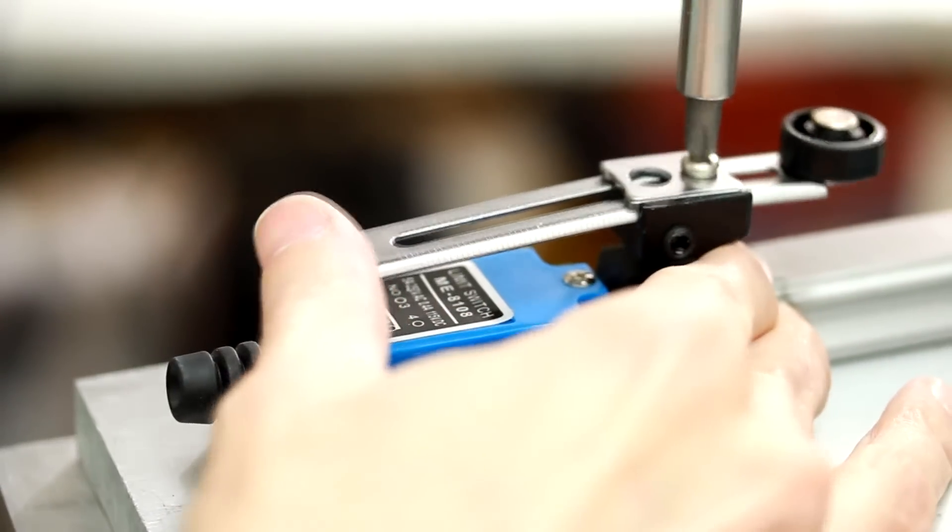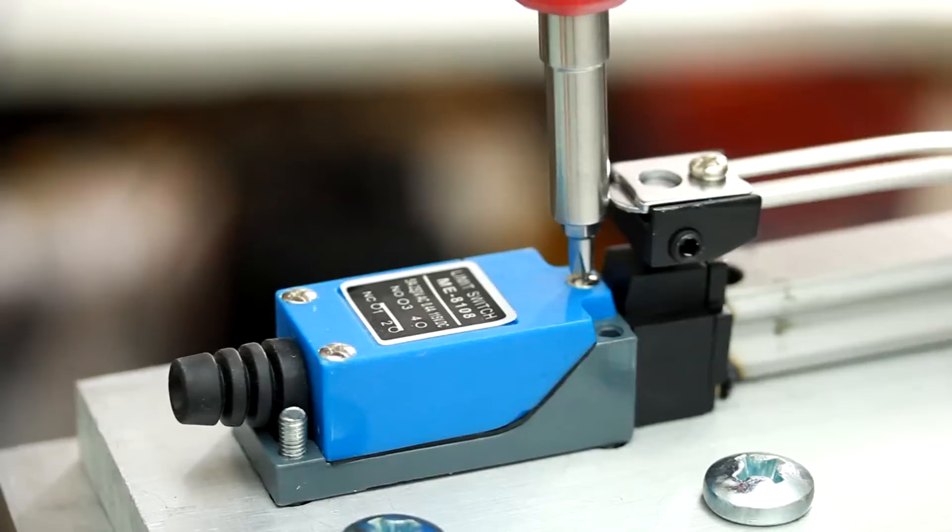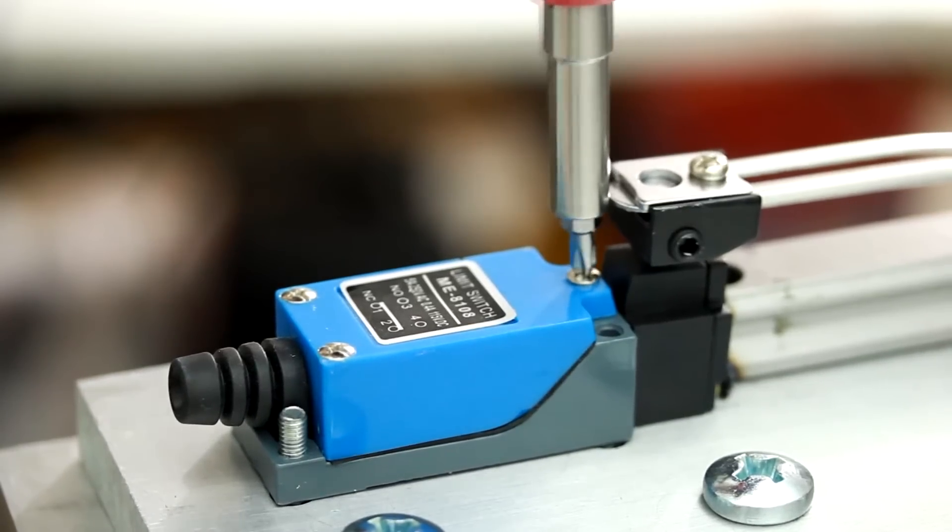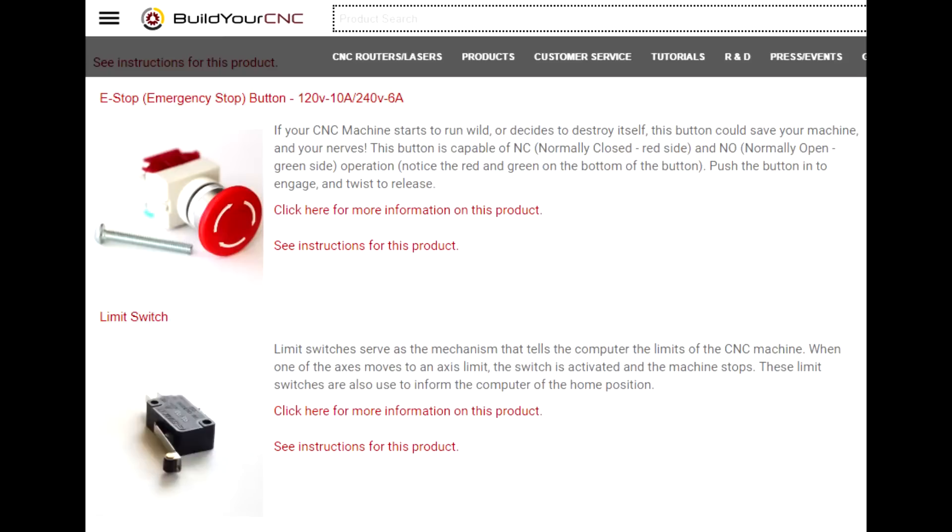In this video, I'm going to show how to wire the limit switches to the Mach 3 USB controller. In this case, I'm using a rotary limit switch, but you can use any standard snap-action limit switch.